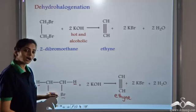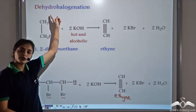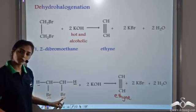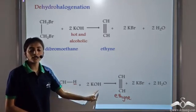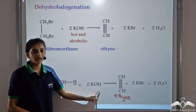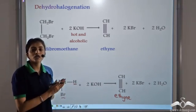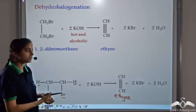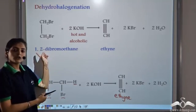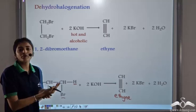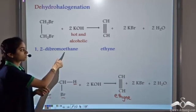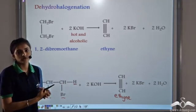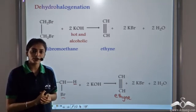So by dehydrohalogenation, that is by the removal of hydrogen atoms and halogen atoms, in this case we have used bromine. In the presence of hot and alcoholic potassium hydroxide, by using this method, we can form the corresponding alkyne. The process remains the same for all the alkynes. In this case, we have used 1,2-dibromoethane. If we have to prepare propyne, we use instead of ethane, we use the appropriate propane reagent and so on. The method remains the same for all the alkynes.